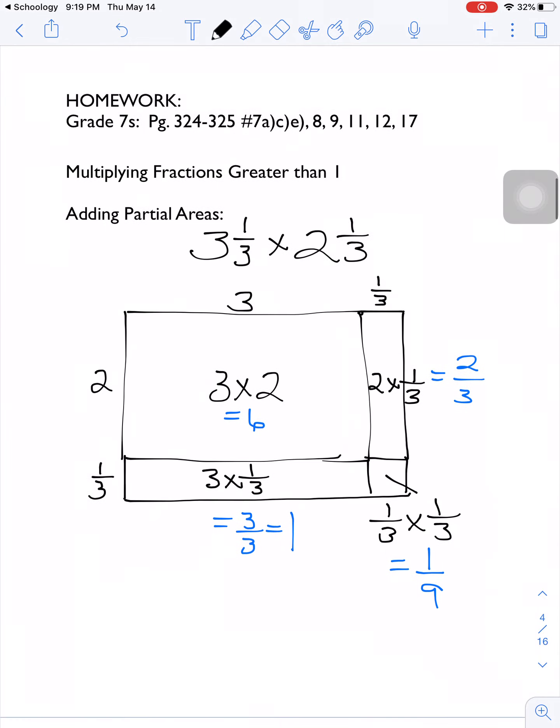Grade 8, we are multiplying mixed numbers today. We're going to use this grid method first with partial areas. So I've got 3 and 1/3. I've drawn that here, 3 and 1/3, and then I've got 2 and 1/3 going down. What we're doing is we've made boxes around the wholes and then the fractions, so we end up with 4 rectangles in the end.